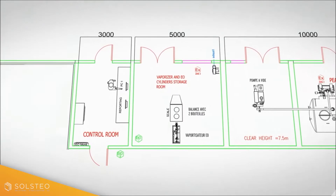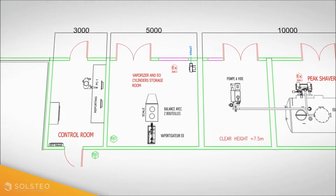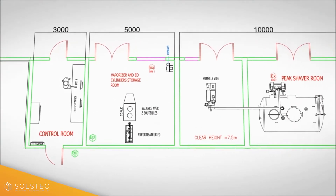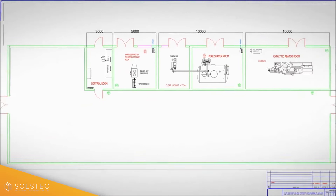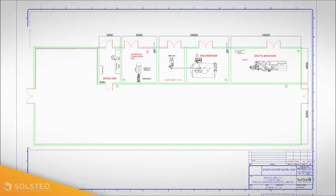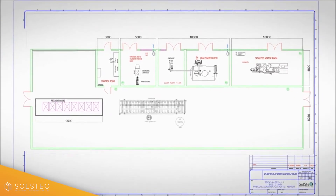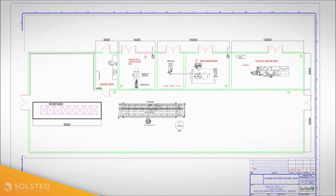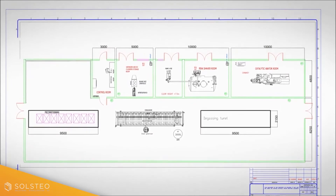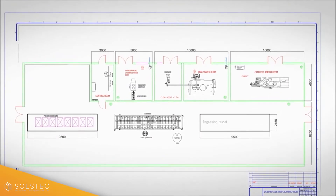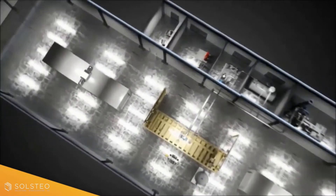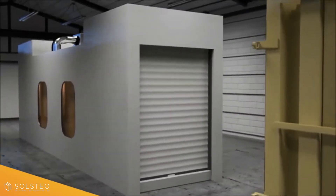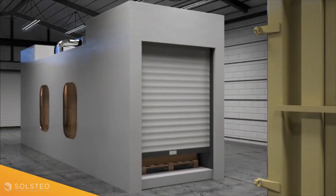A sterilization cycle typically lasts about eight to ten hours and can be divided into three phases: product conditioning, sterilization, and aeration. Let's focus on the sterilization step, after preconditioning where products are heated and humidified.